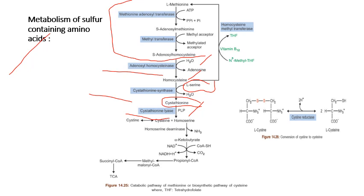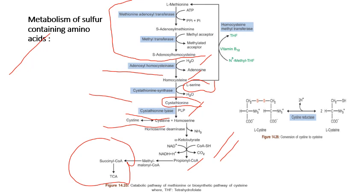Cystine may be oxidized to cysteine, or homocysteine may undergo a deamination reaction by homocysteine deaminase to form alpha-ketobutyrate. Alpha-ketobutyrate then undergoes oxidative decarboxylation to form propionyl-CoA, which is catabolized through methylmalonyl-CoA to succinyl-CoA, and finally enters the TCA cycle. This is the overall fate of methionine. We have seen the transmethylation reaction and also how the other two sulfur-containing amino acids, cysteine and cystine, are synthesized from demethylated methionine.